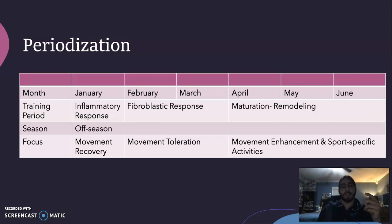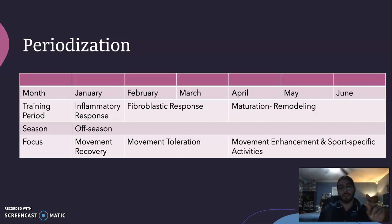The inflammatory response phase is basically for movement recovery — since he had not been training for a while, we want to get him accustomed to movement. For phase two, the fibroblastic repair phase, we focused mainly on movement acceleration. By this point, loads have been gradually added and he should be accustomed to movement, so we are just getting him accustomed to managing the pain.